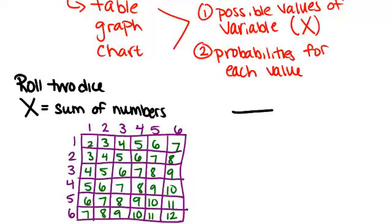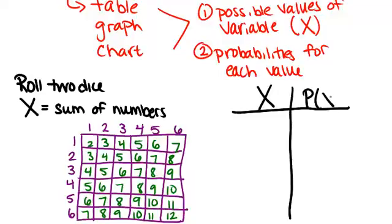So I'm going to make a table that has two columns, one for X and one for the probability of X. So first let's think about what are all the possible values of X. And X is the sum of the numbers.